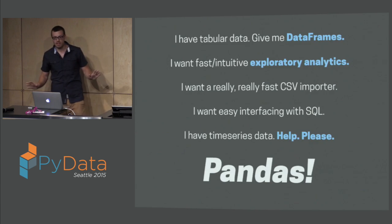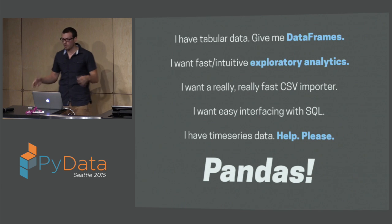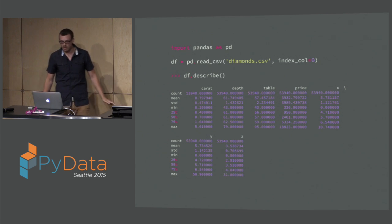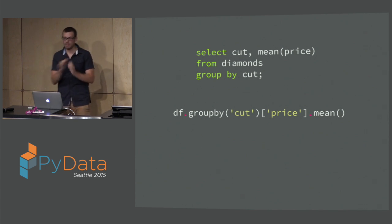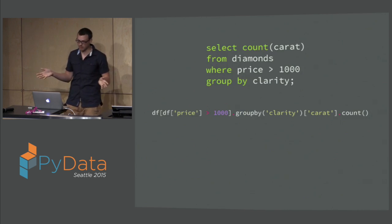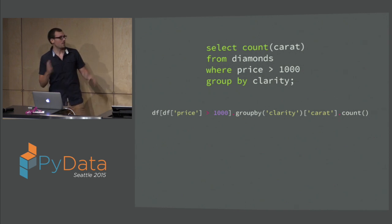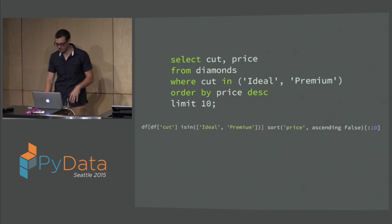So I have tabular data. I want data frames, fast and intuitive exploratory analytics, a really fast CSV importer, an interface with SQL, and I have time series data. Help me please — Pandas. A lot of you are familiar with Pandas. It's got a very fast CSV reader. You can do summary statistics, which is really nice for data exploration. Going back to SQL-like queries — select cut and the mean of price from diamonds, grouped by — that's all just a one-liner in Pandas. With Toolz you had to build sort of convoluted examples; with Pandas, most of these are one-liners. More complex queries are the same sort of thing: fancy slicing, some grouping, and then a count — all condensed into a nice single line of code.